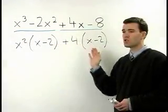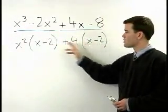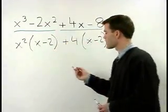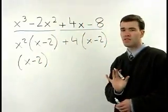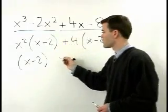Now we can finish it just like the last problem you were doing. Since there's an x minus 2 in each of these two terms, it factors out. So we have x minus 2 times what's left inside the parentheses, which is x squared plus 4.